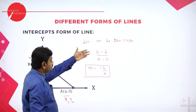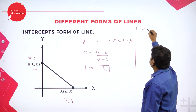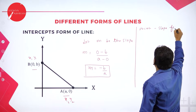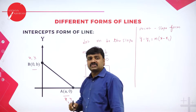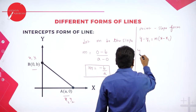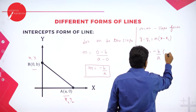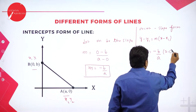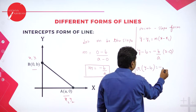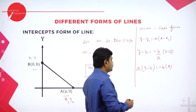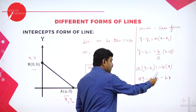Now using point slope form: y minus y1 is equal to m into x minus x1. Here x1 y1 is the point 0 comma b, so y minus b is equal to m, which is minus b by a, into x minus 0. Rearranging: a into y minus b equals minus b into x, which gives ay minus ab equals minus bx.